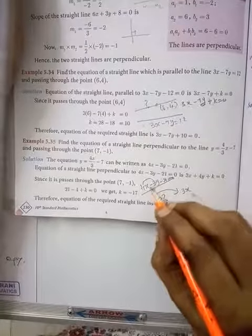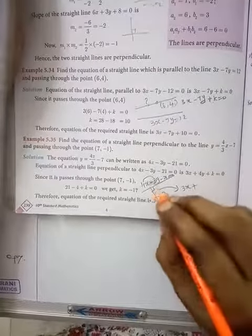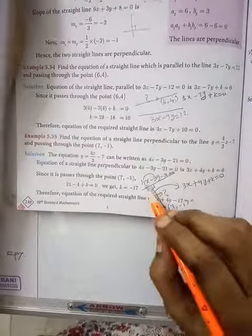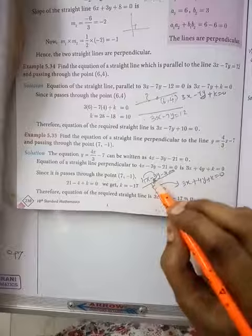Then 3x, change the sign to make it plus, then 4y plus k equal to 0. So coefficient of x and y, interchange and change the sign.